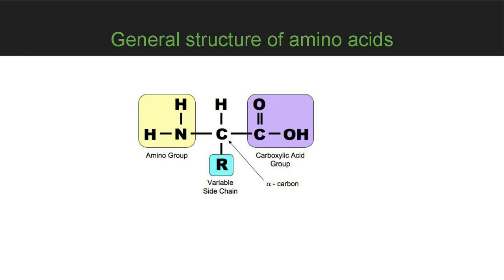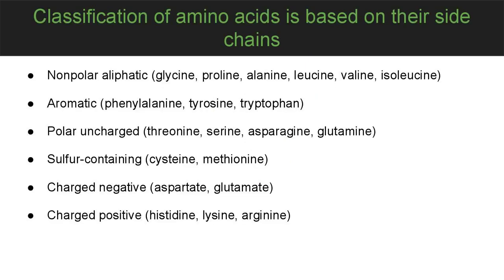Three of the alpha-carbon's bonds interact with the amino group, the carboxylic group, and the variable side chain respectively. The fourth bond connects to a hydrogen atom. Based on their side chain structure, we can divide amino acids into several groups.